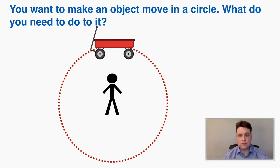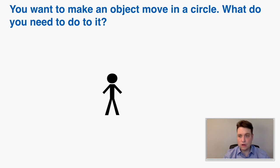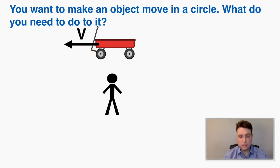You can't just let it continue with what it's doing without applying some force to it, because if you do that it's just going to continue with whatever velocity it already had, according to Newton's first law. So let's say that you have this cart moving toward you with some velocity and you want to make it move around you, and imagine that you have a rope that you extend out to the cart.